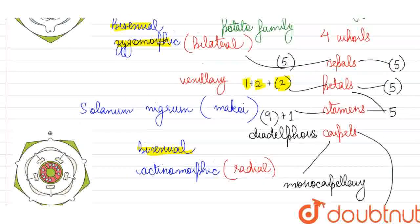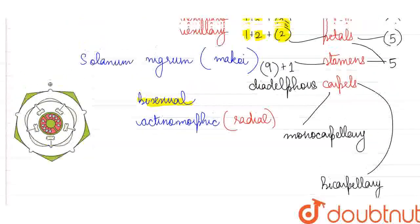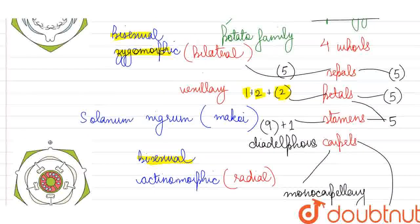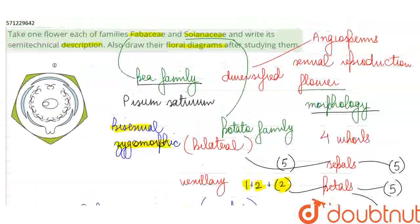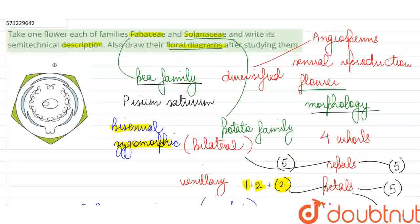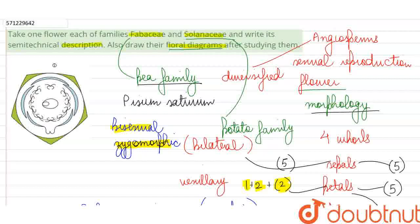We have described all the four whorls and the symmetry of the flowers. Semi-technical description of these flowers is complete. And when we look at the floral diagram, which is actually a diagrammatic representation of these characteristics only, we will see how the morphology of the different floral parts has been represented here.